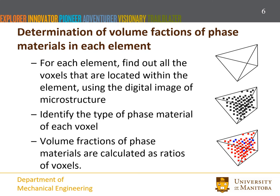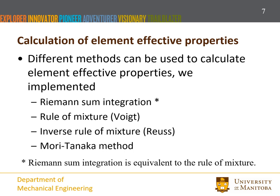To calculate element effective properties, volume fractions of phase materials in the element are required. To calculate volume fractions of phase materials in an element, we first find out all the voxels located in the element and then identify their material types. Volume fractions of the phase materials are calculated as the ratio of the voxels of each material type.